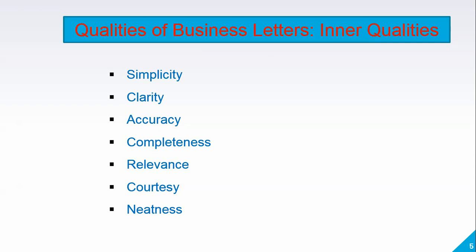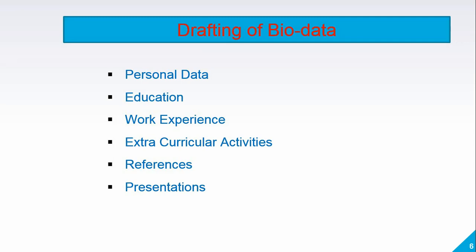These are the qualities of business letters. Now we are going to talk about drafting of bio data. Whenever you want to apply for a job, we need to have bio data. There are three concepts which we are going to see one by one: bio data, CV, and resume. Bio data means biological data — when you provide your biological data, it is called bio data. The contents of bio data are: personal data, education data, work experience, extracurricular activities, references, and presentations.